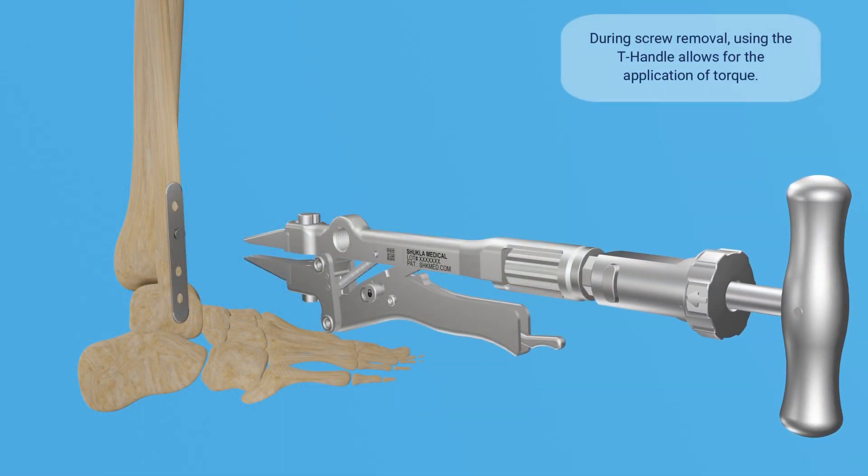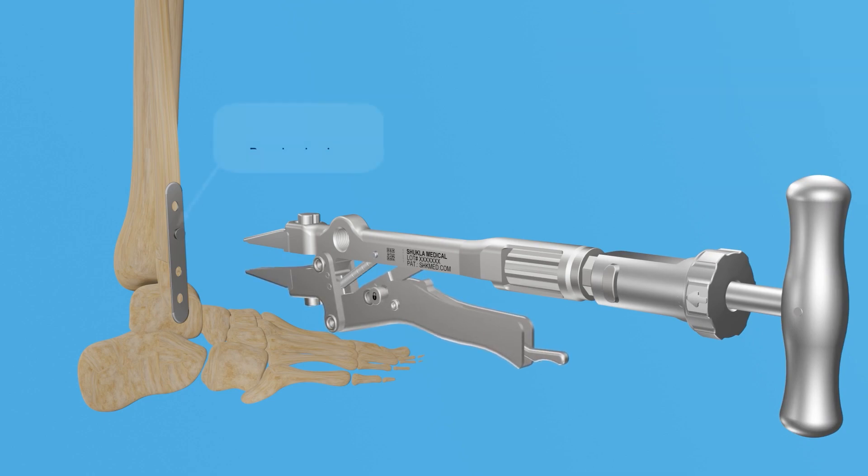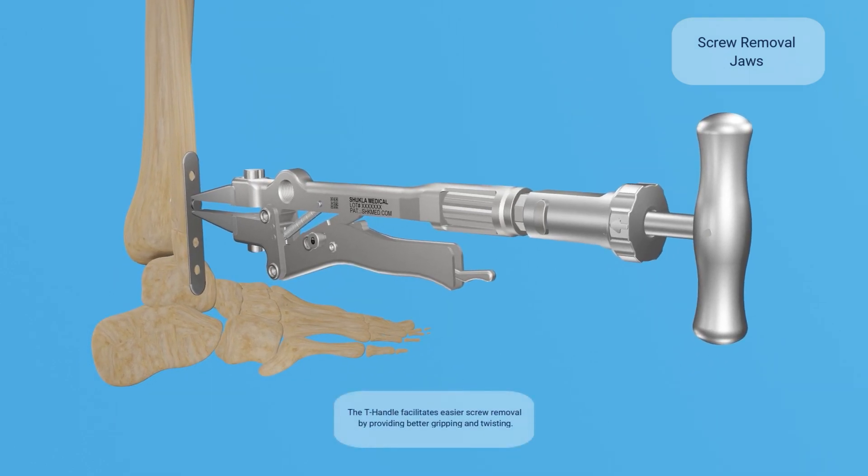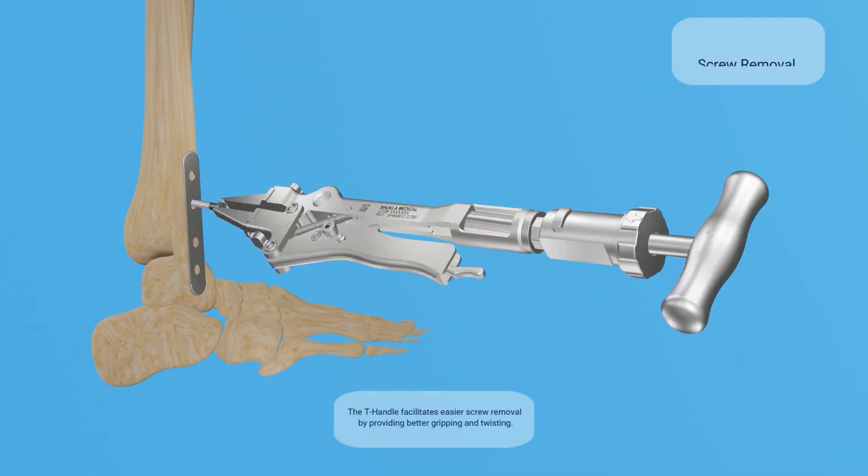The screw removal jaws can remove intact and stripped screws ranging from 2 mm to 8 mm diameter. The T-handle connection is mainly used to extract screw implants by applying twisting force.